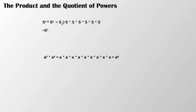Let's start out with two numbers written in exponential notation. I have 5 to the fourth and I'm going to multiply that by 5 to the third. So really that means four fives being multiplied by three fives. What we see is that I have a total of seven fives being multiplied together. My exponent here is 7, and in exponential notation I have 5 being multiplied together seven times.